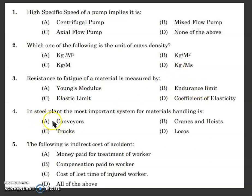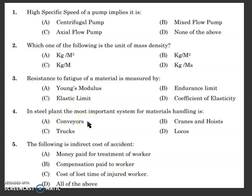Next one: in a steel plant, the most important system for material handling is — conveyors, cranes, hoists, or trucks. When you use a steel plant or machinery build-up, the movement should be very fast without any difficulty, and smooth transport of material is low cost. Conveyors are the most important system.